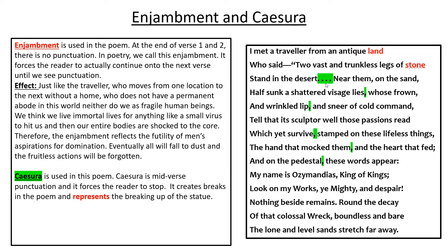Where enjambment forces you to continue and doesn't give you a chance to breathe — 'I met a traveller from an antique land who said' — caesura forces you to stop. Poets use these two techniques in order to emphasise the fact that we, as human beings, have no power.